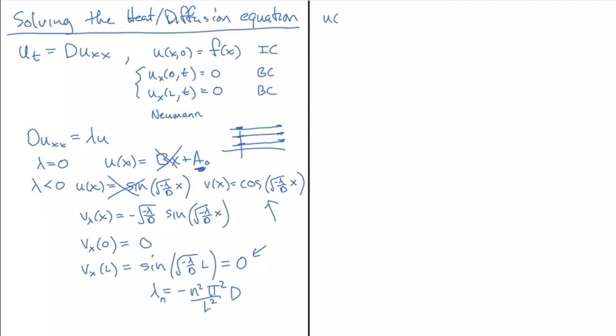So, now my overall function u(x,t), that solves this Neumann boundary condition problem, I can write it down as a_naught times, now I could put an e to the zero t, but that's just one, so I won't bother. And then I add to that a sum from n equal 1 to infinity of a_n cosine, well, let's put in the exponential first, e to the minus n squared pi squared over l squared d times t, and then cosine of n pi x over l.